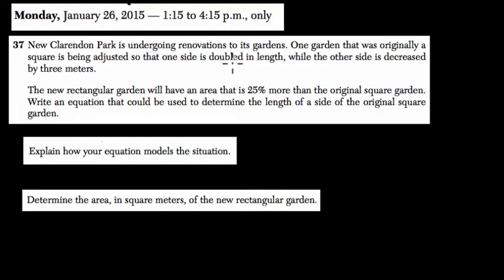Let's read this problem together to get a sense of what it's asking. New Clarendon Park is undergoing renovations to its gardens. One garden that was originally a square. So here I'm going to underline this because we're already being told that we're dealing with the shape of a square. We're going to keep that in mind as we go forward. We have some kind of square garden and it's being adjusted.